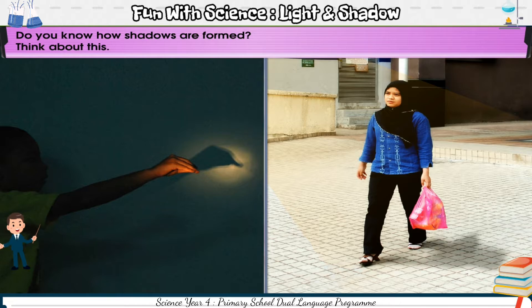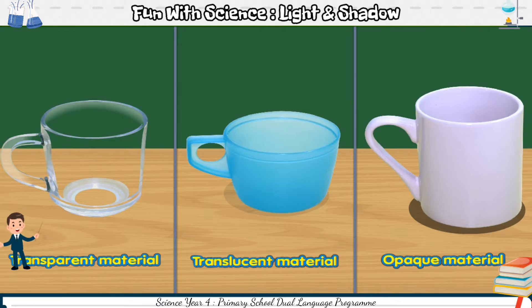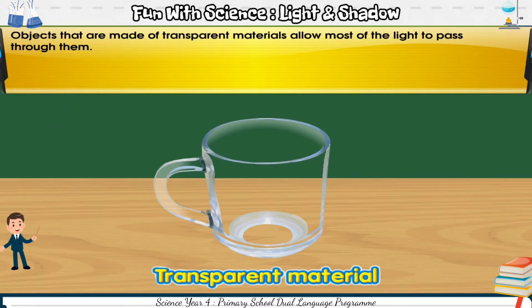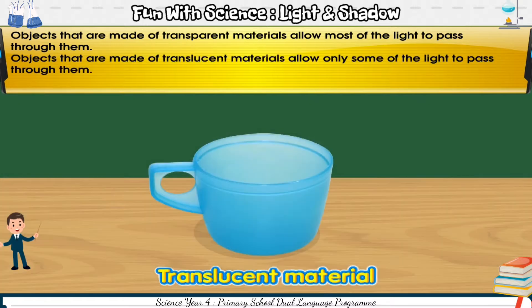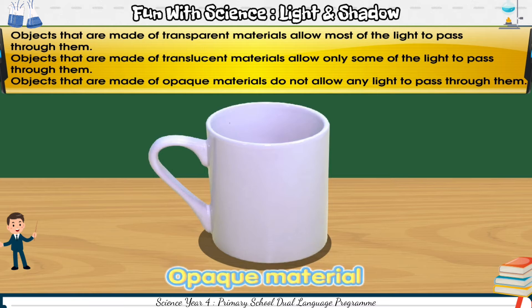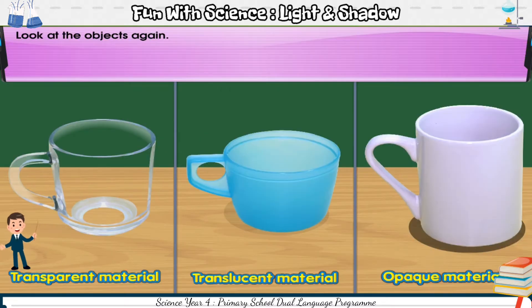Think about this. We have learned that objects made of transparent materials allow most of the light to pass through them. Objects made of translucent materials allow only some of the light to pass through them. Objects made of opaque materials do not allow any light to pass through them. Look at the objects again — which of these objects form a shadow?